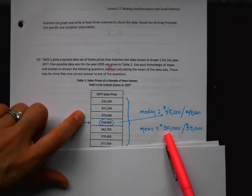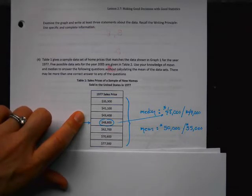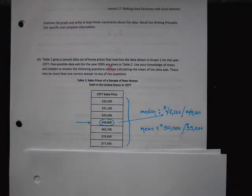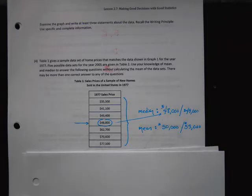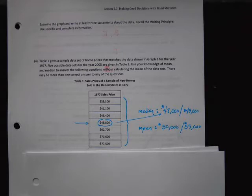Now they're going to give you possible sets of data from 2005. This would take at least a half hour to analyze in class. So pause the video, go to 2005 on your graph, and figure out what you think the median and the mean would be for 2005. This is the kind of graph reading that's on the final. Write down your answers and then come back and we'll see if we were close.